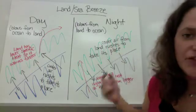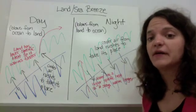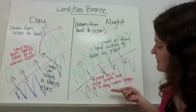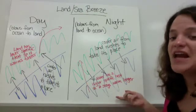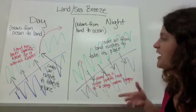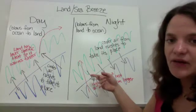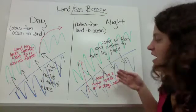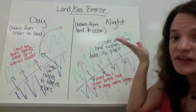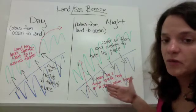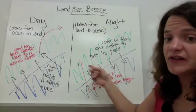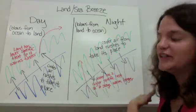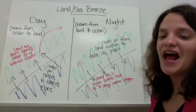At nighttime at the coast, this process reverses. Water has a higher specific heat than land, so it takes longer to cool off and stays warm longer. After the sun goes down, the land has already cooled. The air above the warmer water warms by conduction and rises by convection. The cooler, denser air over the land rushes in to take its place, creating a constant breeze from the land to the ocean.